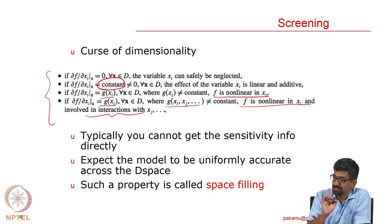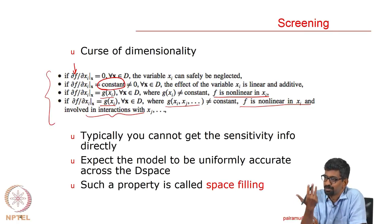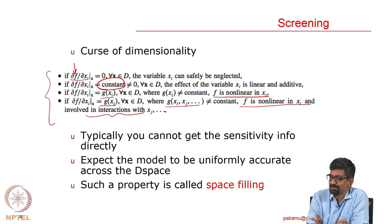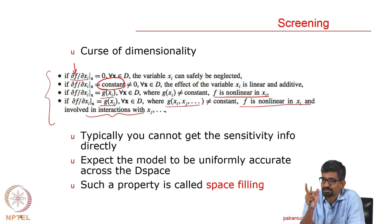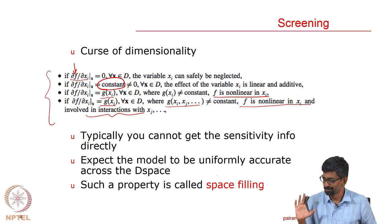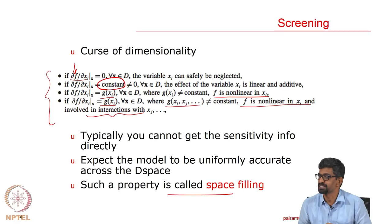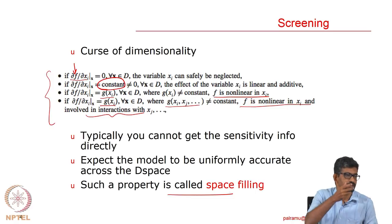Getting this sensitivity information is not easy because you do not have the function. Just to get gradient information at one point you need 3 evaluations per dimension — for 10 points you need 30 evaluations, which is not easy. Typically you cannot get full sensitivity into the input, so you expect the model to be uniformly accurate across the design space. Such a property is called the space-filling property.